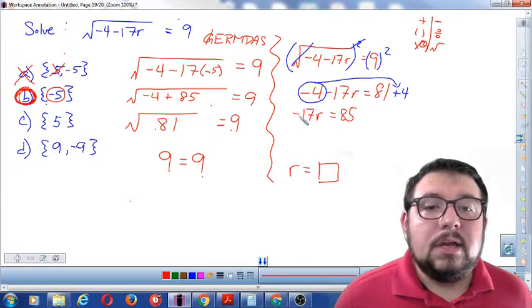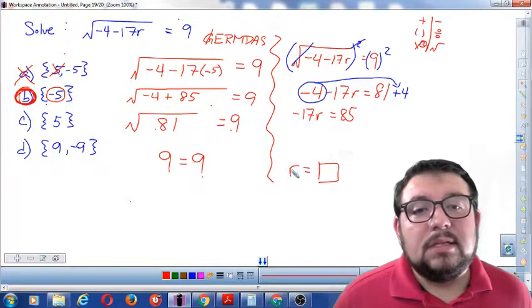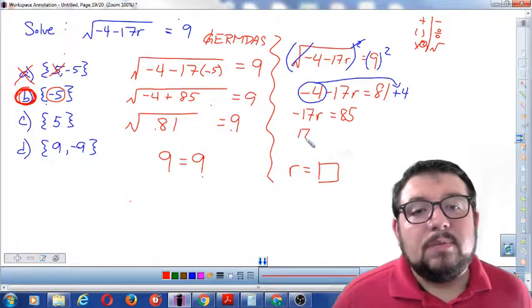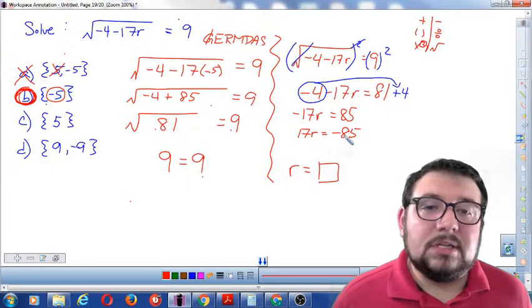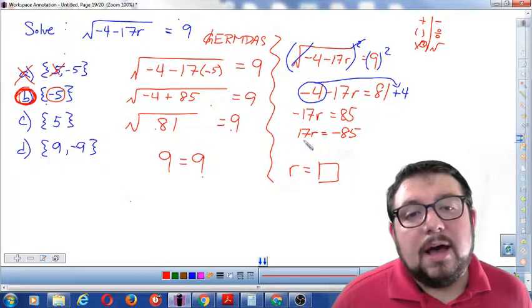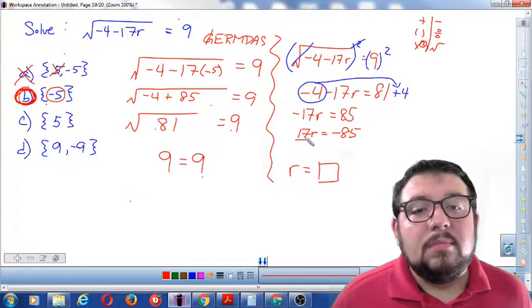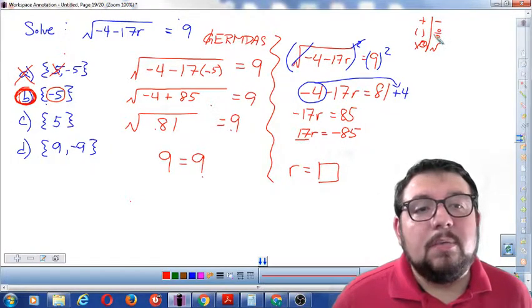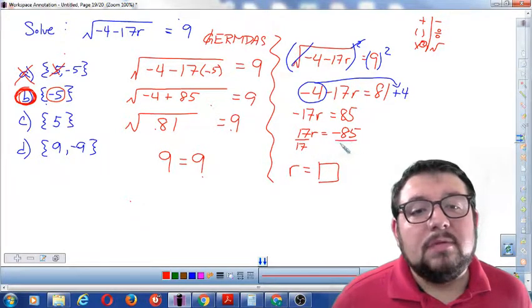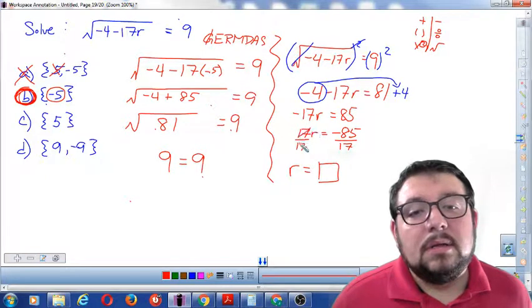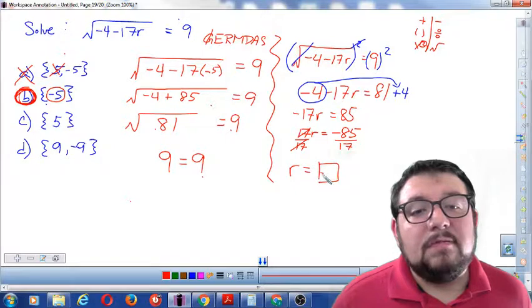And now we got to change this to be positive because I see that this r is positive. So I'm going to put 17r equals negative 85. If you change this side you have to change this side. Now I'm going to divide. Multiplying is crossed out by dividing. So 17 times r we divide by 17. And here we divide by 17.